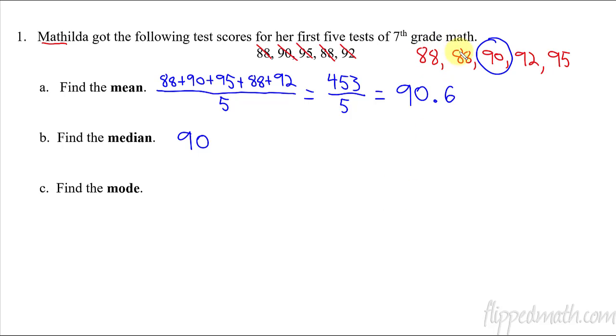So the median, the middle number, is 90. If we wanted to count, you could. One, two, three from the beginning, and then count from the back end. One, two, three. It would be the middle third one from both sides. That's the median. That's it.